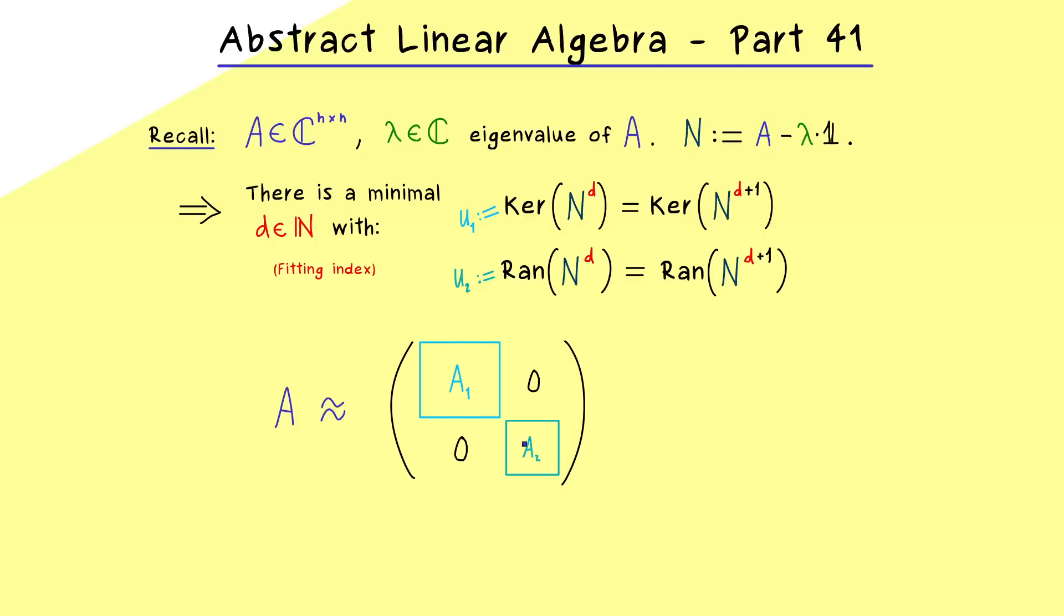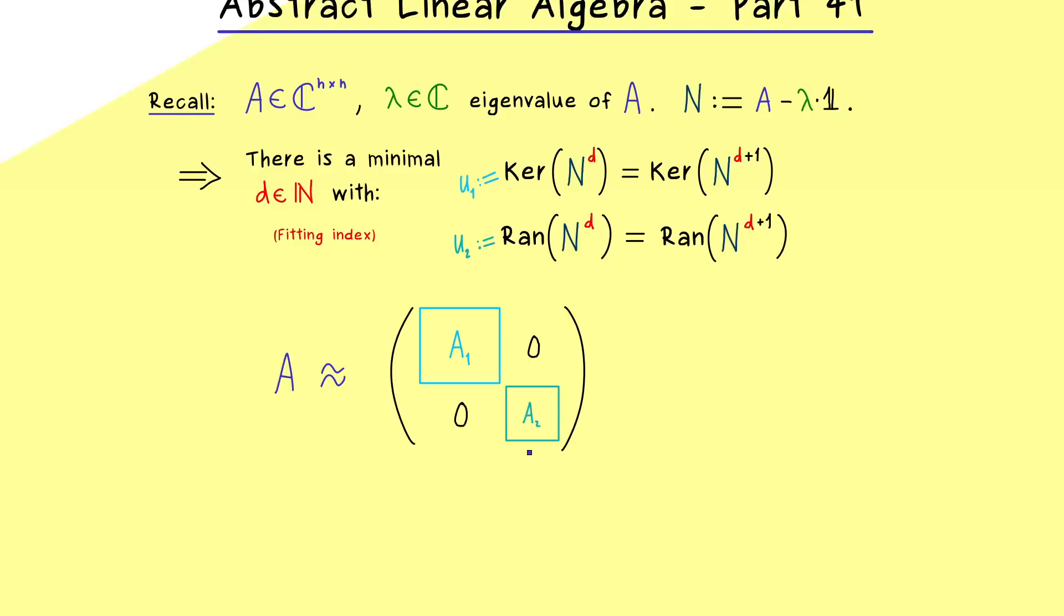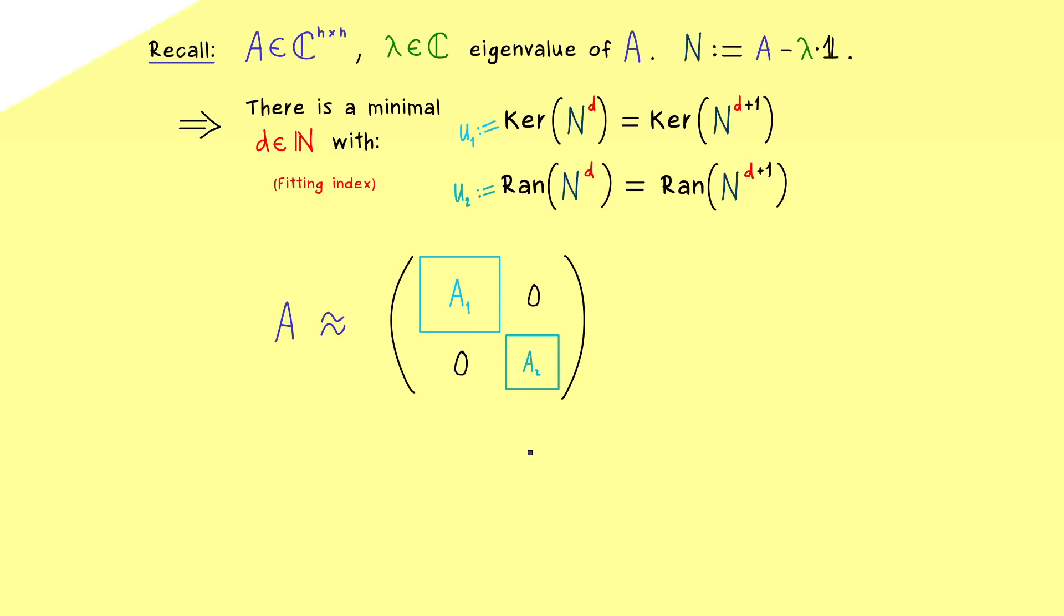And now to analyze these two matrices, it might be helpful to go to the abstract level, which means seeing N as a linear map. So let's say we have the linear map L from the vector space C^n into C^n again. So this means L should be given as Nx. So you could simply say that N is a matrix representation of the linear map L.